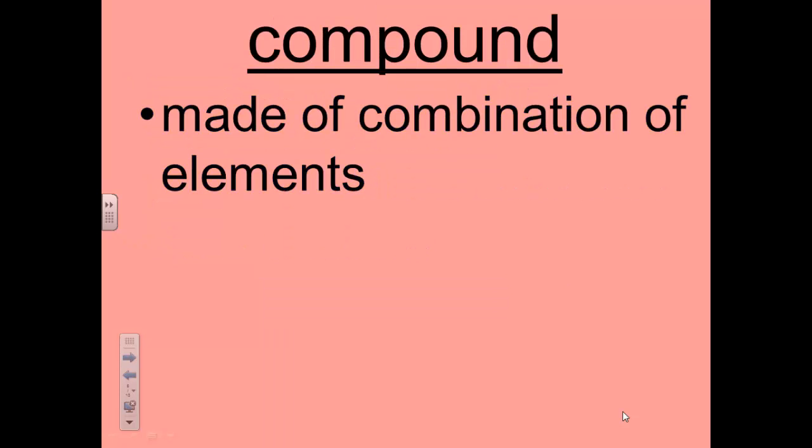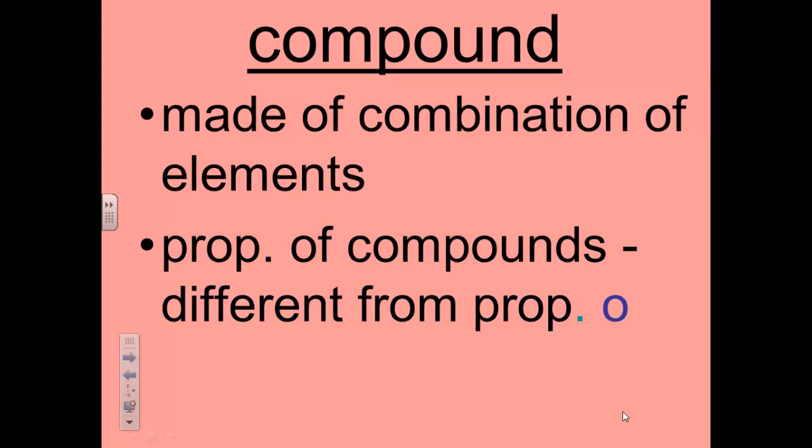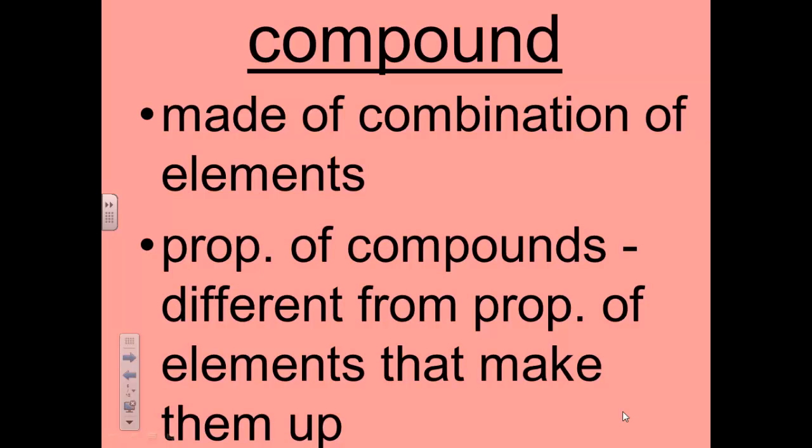A compound is a type of matter made of a combination of elements. Atoms of the elements are combined into molecules. Most things that you see around you are compounds. Every molecule of a compound has the same combination of elements. Take water, for example. Every water molecule has the same three atoms.